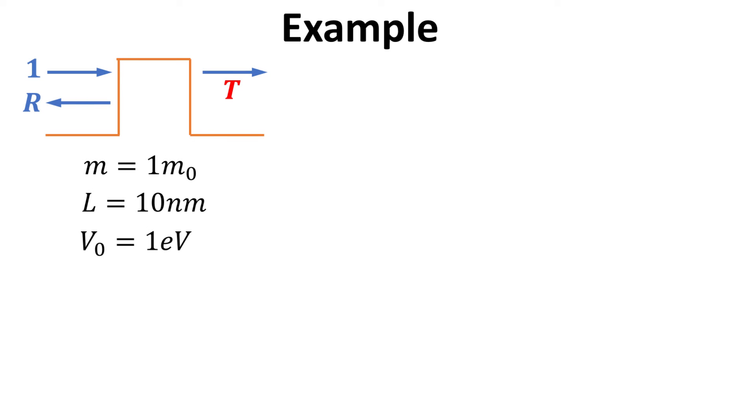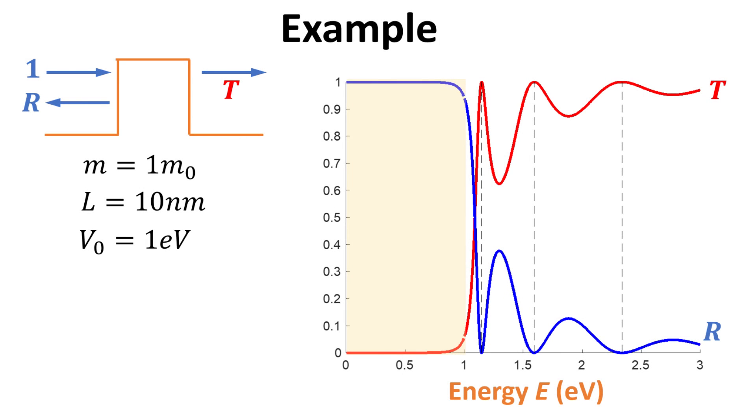Okay. We are now ready for a concrete example. This can be implemented very easily with programming tools such as MATLAB. Just leave a comment here if you would like me to also share the script in the description box. We consider here an electron with the free electron mass, a rectangular barrier with a length of 10 nanometers, and barrier height of 1 electron volt. Using the method we discussed, we plot here the transmission and reflection probability as a function of energy, as shown in the red and blue curves respectively. We see that the transmission increases drastically when the electron energy exceeds the barrier energy of 1 eV. The barrier is highlighted in yellow.